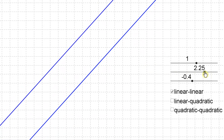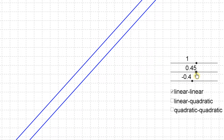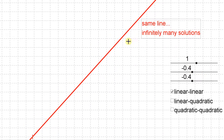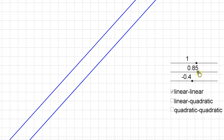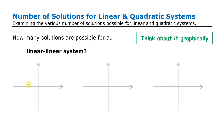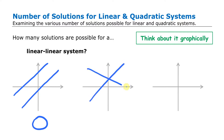The other special thing that can happen is if they happen to be exactly the same line. There are two lines in exactly the same place, and they have infinitely many solutions because every point is common to both lines. So for a linear-linear system you can have zero solutions, one solution, or infinitely many solutions.